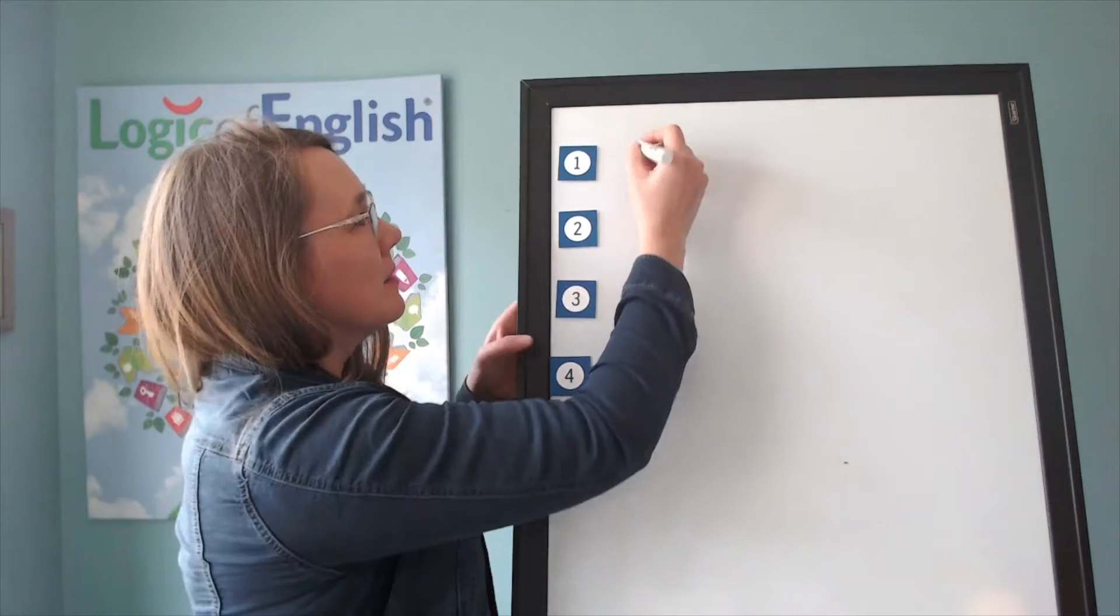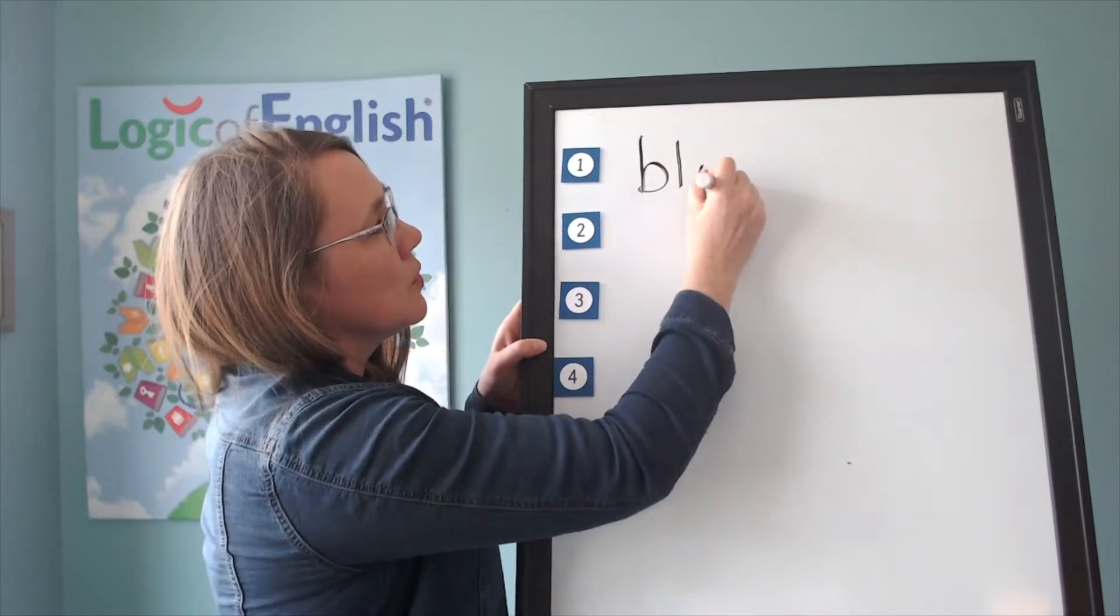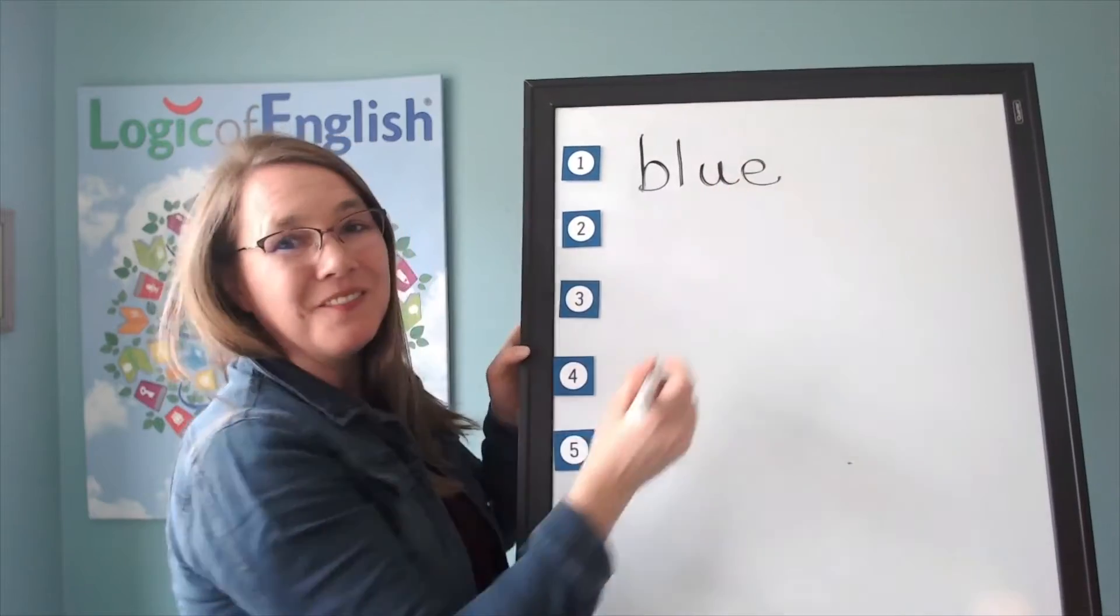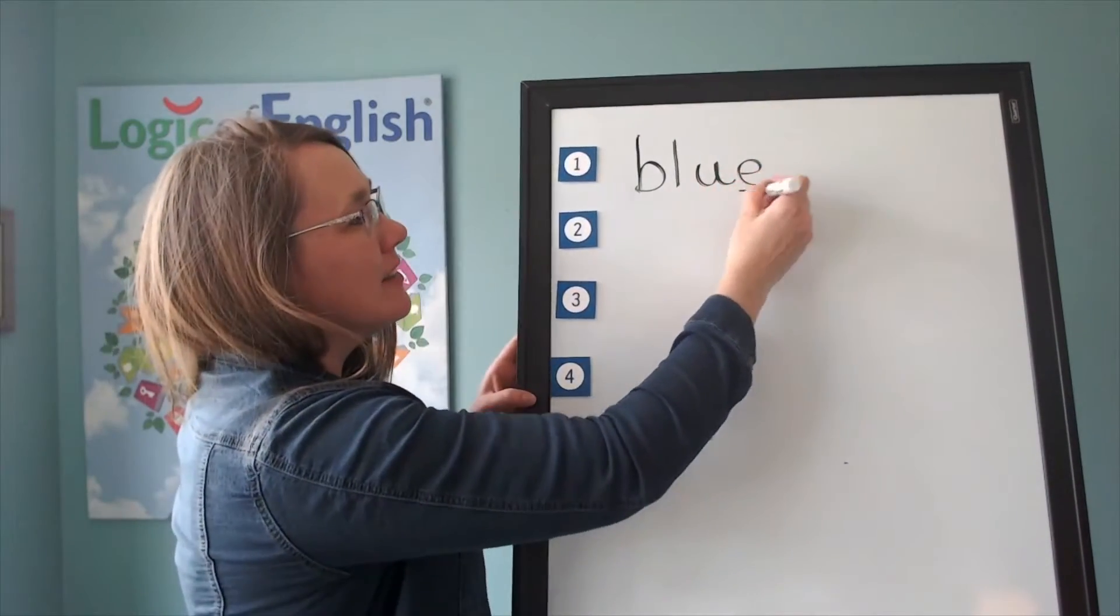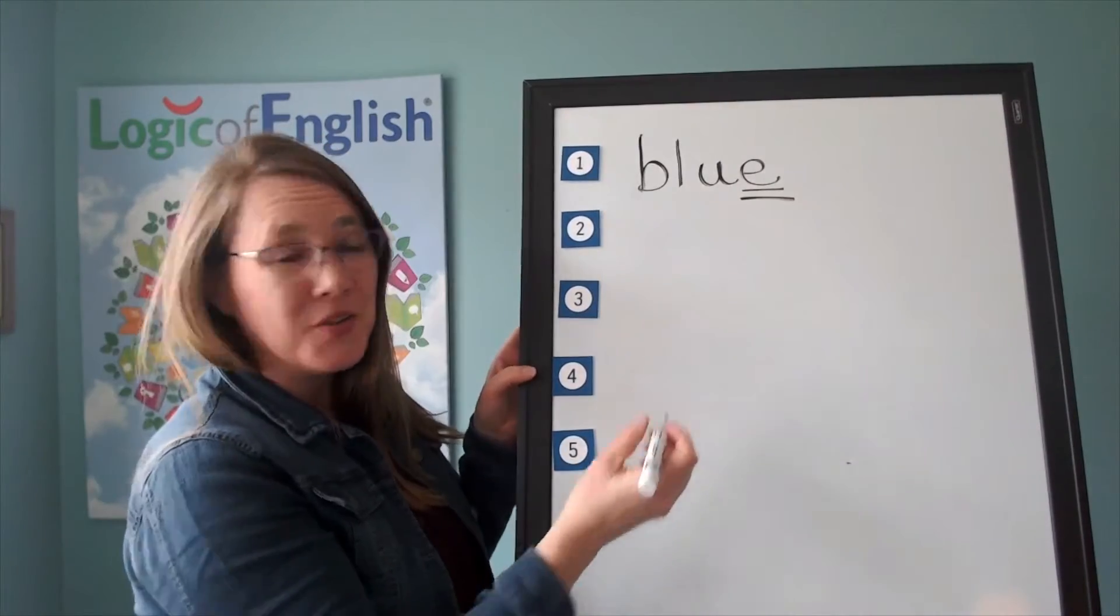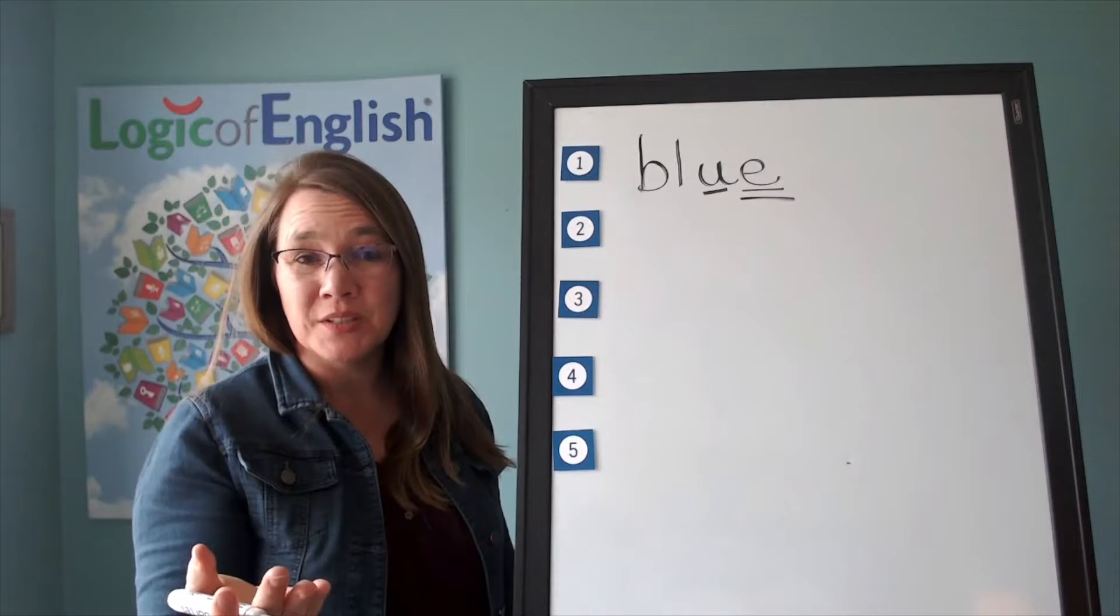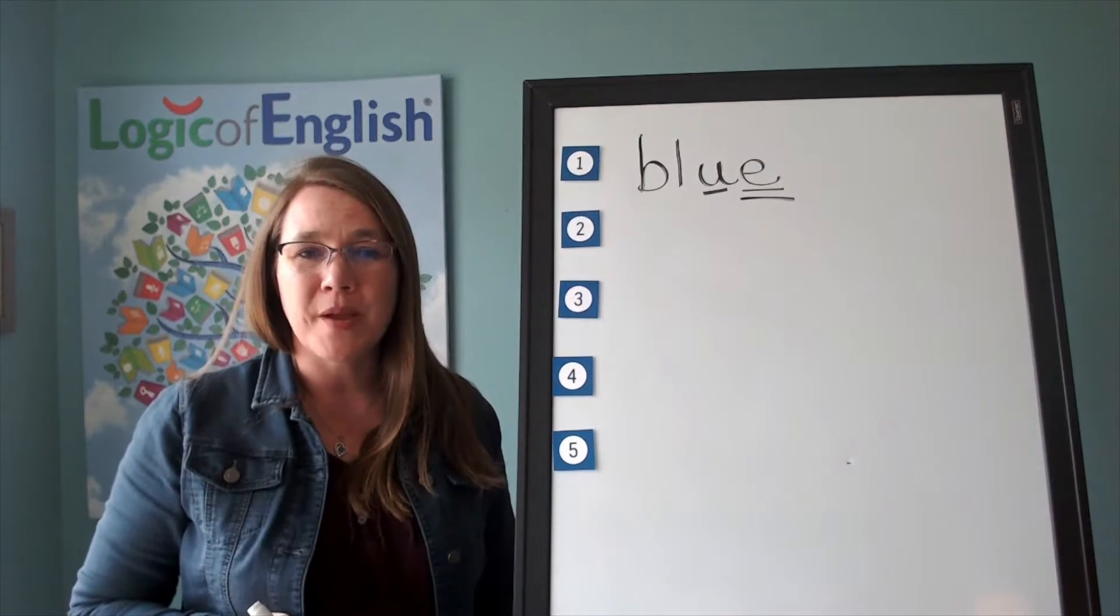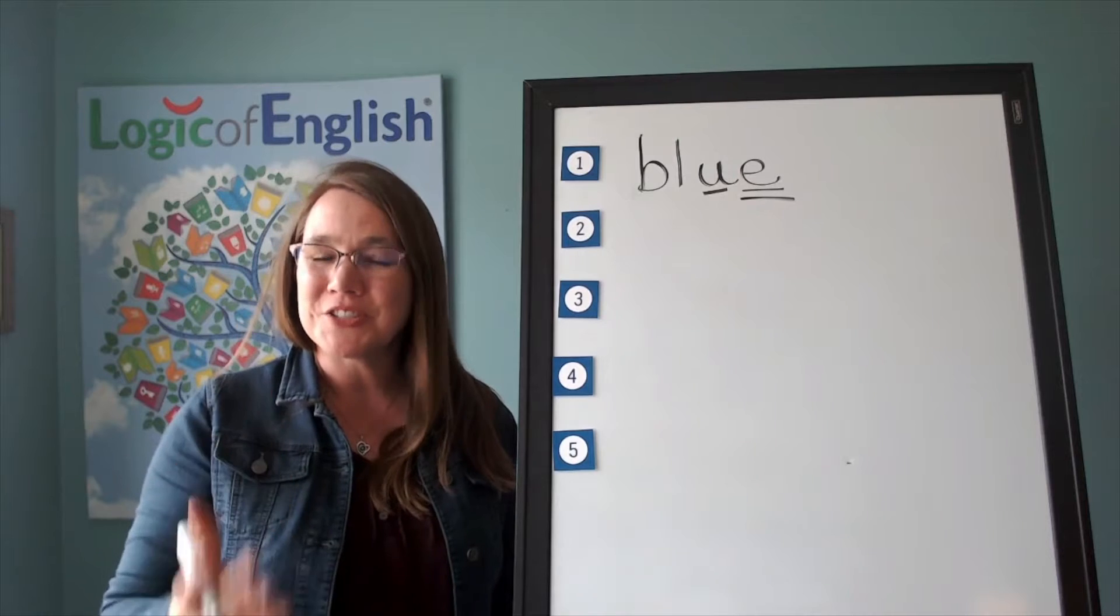Help me to write it. Buh, ul, oo. Silent final E. Why do we have a silent final E in blue? You're right. It's because English words do not end in U. What's one of the rules we know about that? English words do not end in I, U, V, or J.